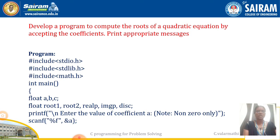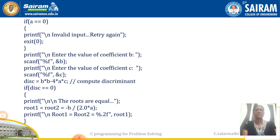Coming to void main, the inputs required are three: that means a, b, c coefficients. And the outputs required are root1 and root2. So the required input variables and output variables are declared.